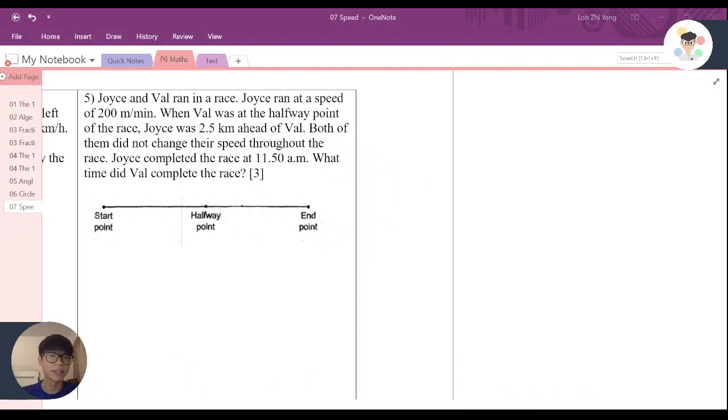Welcome back to digital class and this is a discussion for booklet number seven. Let's look at question number five. Here it says that Joyce and Val ran in a race.